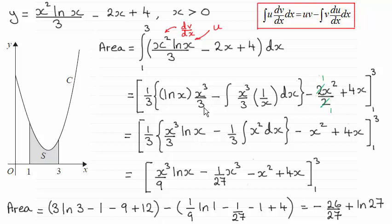Then it's minus the integral of what we've just integrated — x cubed over 3, that's the v part — multiplied by the differential of natural log of x, which is 1 over x, and we integrate this with respect to x.